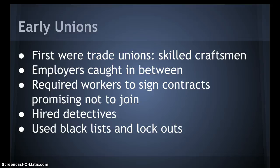Companies could require workers to sign contracts promising not to join a union. Others would hire detectives and place any worker who tried to unionize on a blacklist — meaning no company would hire them. If workers did form unions, the company could use lockouts, keeping workers out without paying them. If a union called a strike, the company could hire replacement workers, sometimes nicknamed scabs.